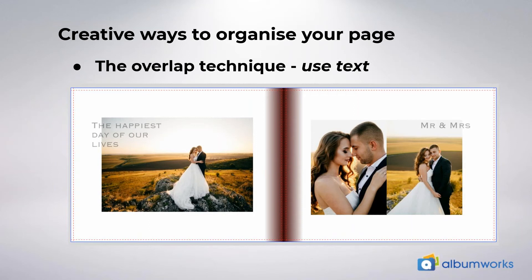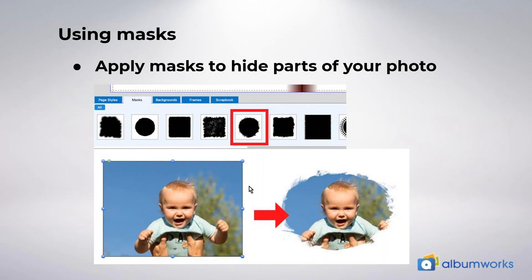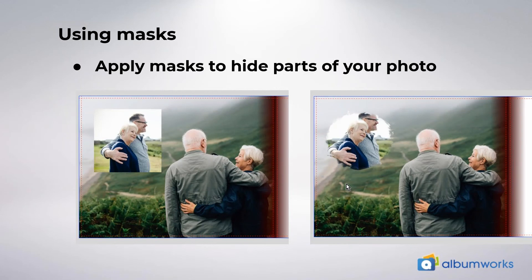Moving on to masks — let's have a quick refresher on what masks are and how to use them. Masks are found at the bottom tab of the editor and, as the name suggests, they mask part of your photo. Essentially they hide the outside parts of your photo, so which mask you choose determines what your photo will look like. In this example I've used a rounded mask. Masks can look great by themselves on top of a textured background, or placed on top of images. Some masks make the edges of your photo semi-transparent, which allows you to blend photos together.